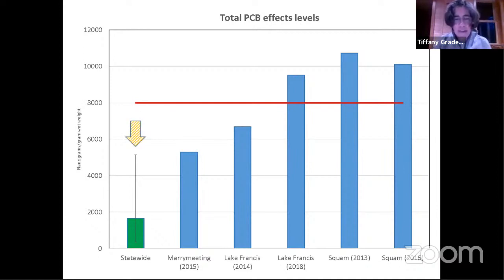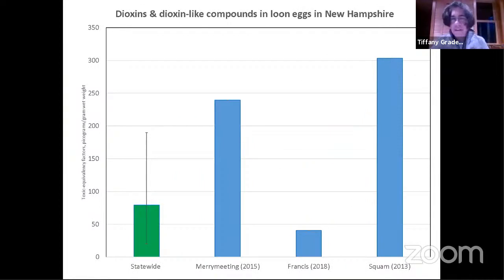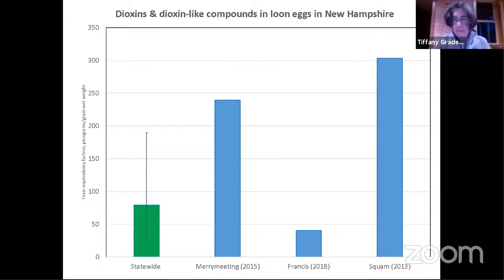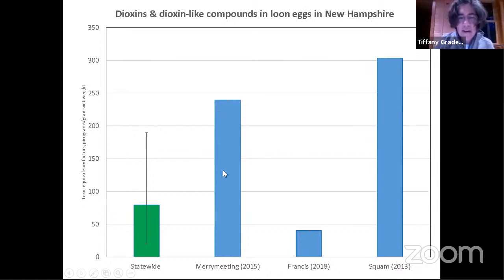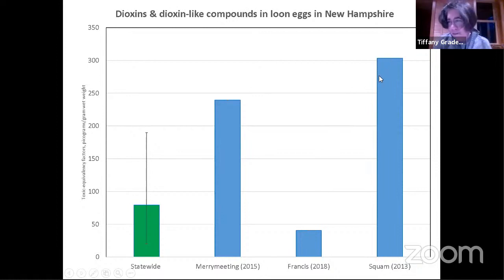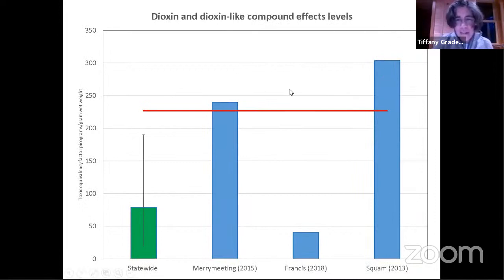Here are our dioxin and dioxin-like compound results — in parts per trillion. Despite being parts per trillion, these are very toxic chemicals that have effects even at this level. The statewide range goes up to about 180 parts per trillion. The Mary Meeting egg is high, the Lake Francis egg is surprisingly low, and the Squam egg is very high. Looking at effects levels, the Mary Meeting and Squam eggs exceed them, and some statewide eggs are getting quite close to that effects level.